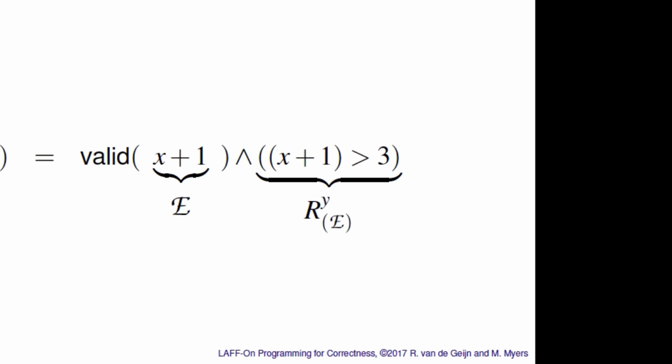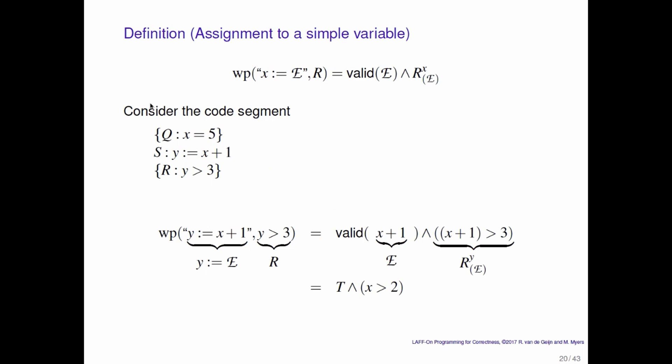And then if you simply apply the definition, you ask yourself the question, is x plus 1 a valid expression? Obviously it is. So that will evaluate to true. And then you have r. Now the variable to which we assign is y, so instead of x we have a y, super y. And then we need to replace that by the expression e. And notice that the expression e is x plus 1. If you then go and you simplify this, you notice that x plus 1 is a valid expression, so that becomes true. And x plus 1 greater than 3 is the same as x is greater than 2. Then you can do AND simplification and you find out that the weakest precondition is x is greater than 2.